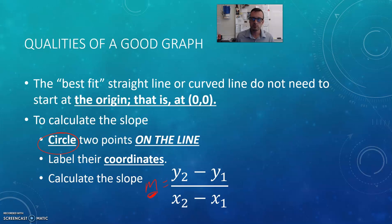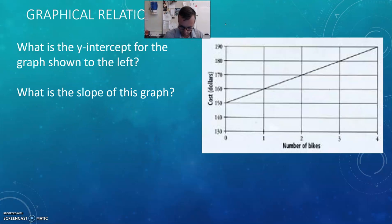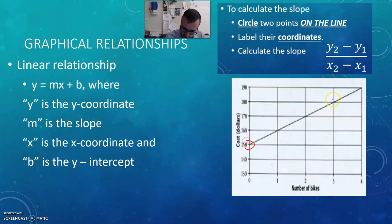After you write that in your notes, flip the page and let's do one with the graph at the top of the next page. We can just pick two points—that was the first thing. First thing we need to do is circle two points, so let's do that. We got this point and this point, why not. Second thing is label their coordinates. This one says 0 and 150, so I'm gonna label that as 0 comma 150. This one says 3 and 180, so I'm gonna label it as 3 comma 180.